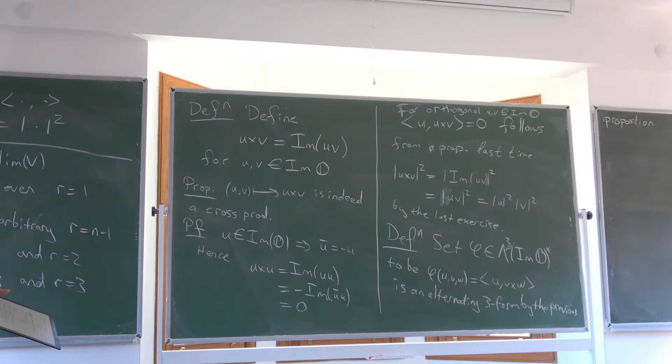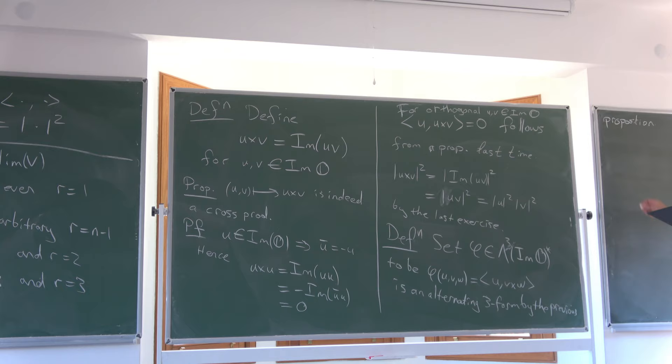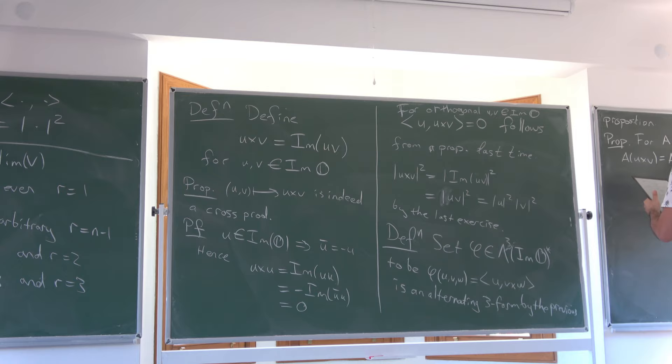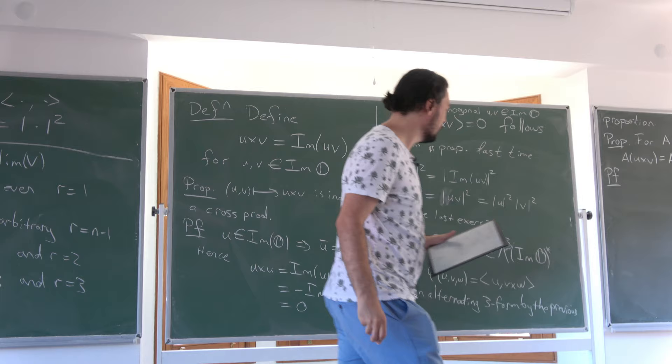So now we define this three-form and we want to think about the stabilizer group of this form inside GL(7, ℝ), the general linear group of the imaginary octonions. We want to prove that this stabilizer group is actually G2. We'll first prove that G2 preserves the cross product — that G2 is the stabilizer — and then prove the other direction.